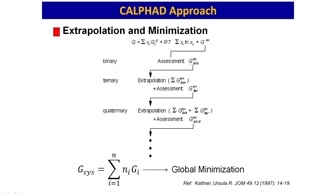For higher-order systems — ternary, quaternary, quinary — you cannot measure everything experimentally. What you do is extrapolate from binary data to higher-order systems. When you do that you also need to assess your data. This extrapolation is what a model does. Once G is known for all phases in a system, you perform minimization of G — whichever phase has the minimum free energy is the stable phase. That is the key principle of CALPHAD.